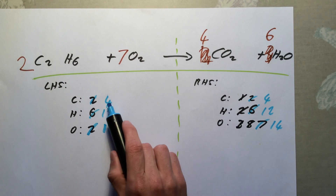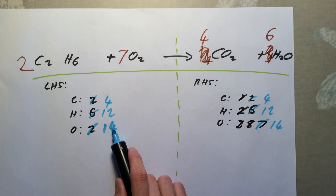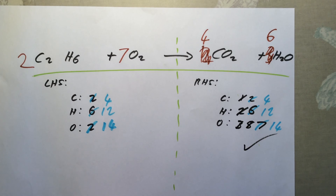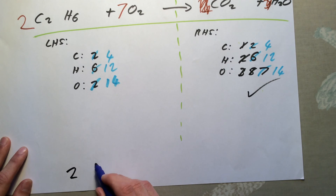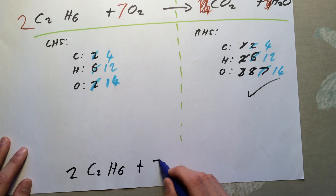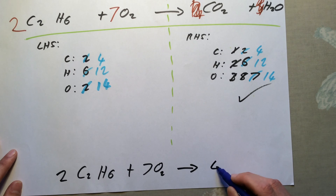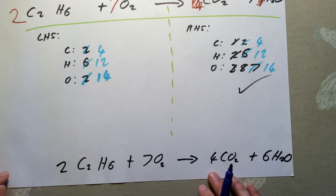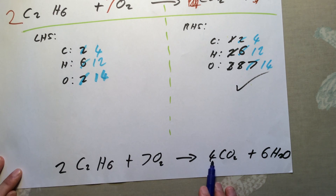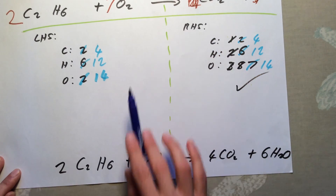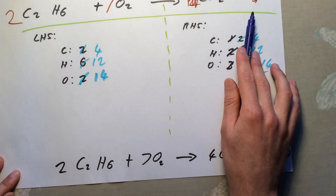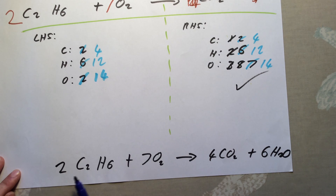Hopefully this is now balanced: four carbons and four carbons, 12 hydrogens and 12 hydrogens, 14 oxygens and 14 oxygens - that looks balanced. You might want to write this out again at the end, so the final equation is: 2C2H6 plus 7O2 gives 4CO2 plus 6H2O. I want to stress that if you would rather use the bubble method for this, that's absolutely fine. In fact, with this example I think it is easier to use the bubble method. But in general, if you do find yourself in a bit of a hole like we had here, if you double up everything in your equation, hopefully that will make it easier to solve.